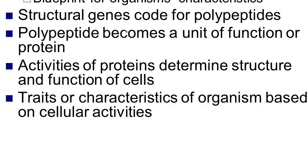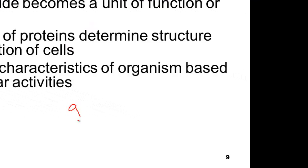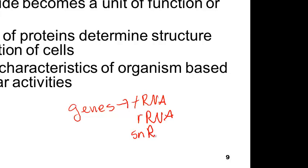Genes form polypeptides, constitute the genetic material, and determine proper cell function. Genes that are called structural genes are the ones that encode for polypeptides. But there are other types of genes that encode for other RNAs — like tRNA, ribosomal RNA, or small nuclear RNAs. There's a whole class of RNAs encoded by genes that are not structural in nature.